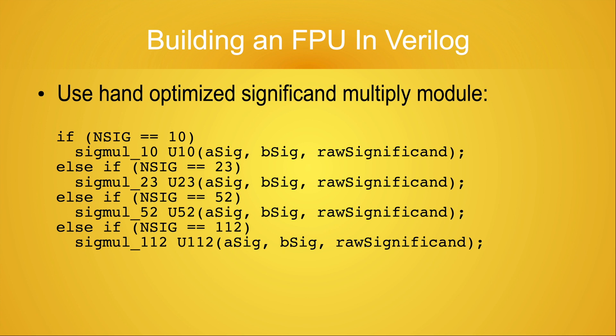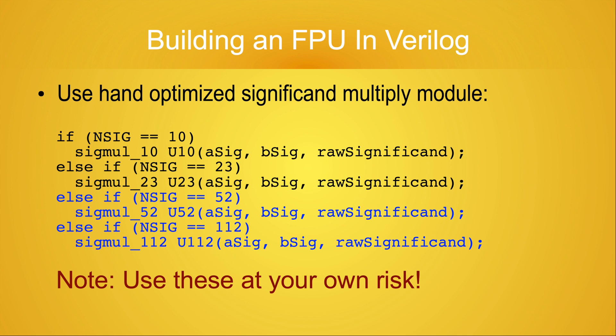I want to note again that I've applied the advice from all my circuits about how to incorporate NSIG-dependent hand-optimized multipliers. You can see what that looks like on this slide. I have tested every possible combination of inputs for the NSIG values 10 and 23 — that is, for the binary 16 and binary 32 floating-point formats — so I'm reasonably confident that they are correct and robust. I have done some limited testing of the significand multiplier code for the binary 64 and binary 128 floating-point formats, but my advice before you choose to trust them is caveat emptor.